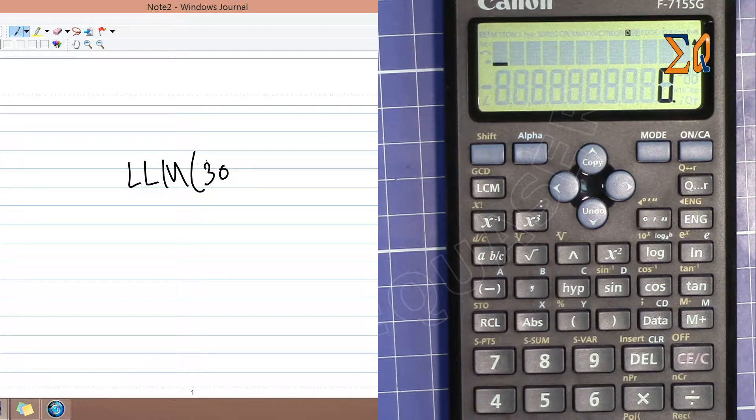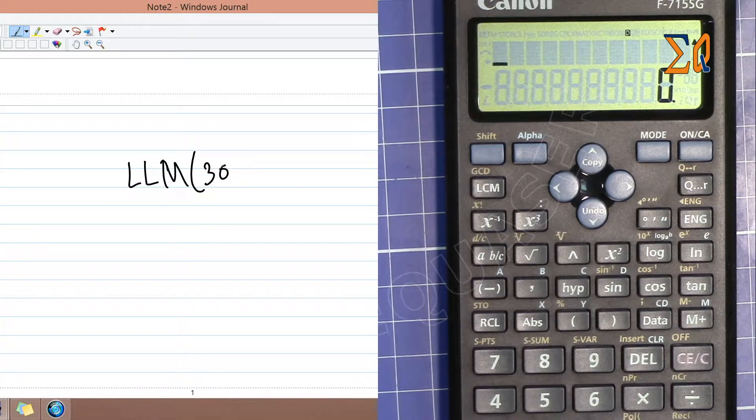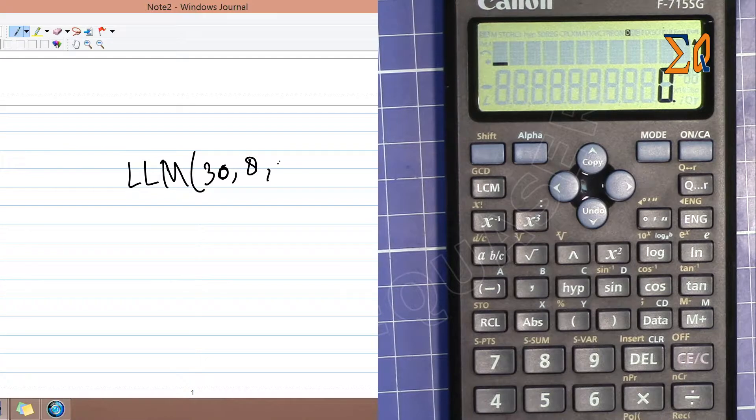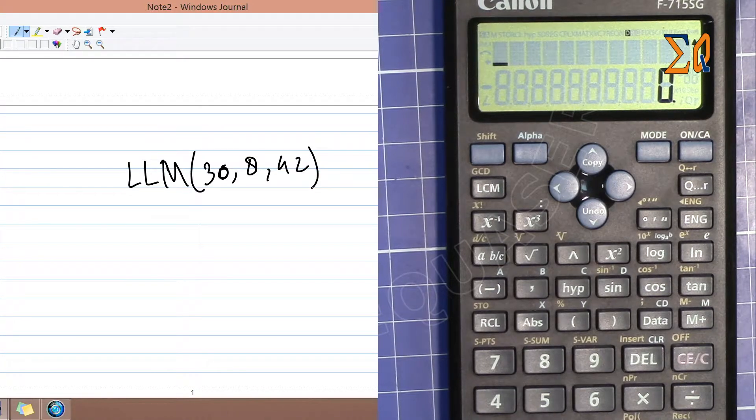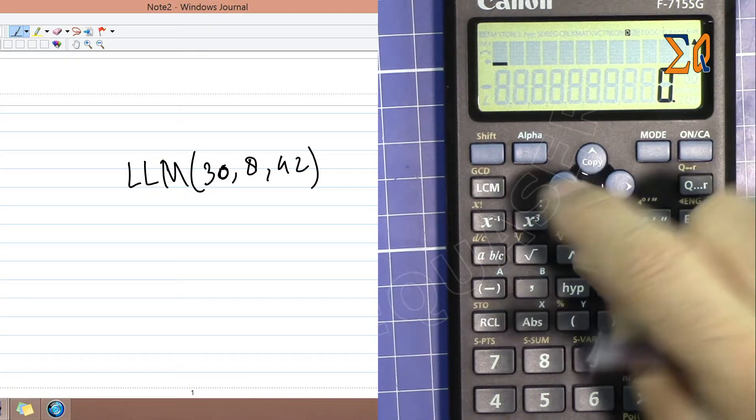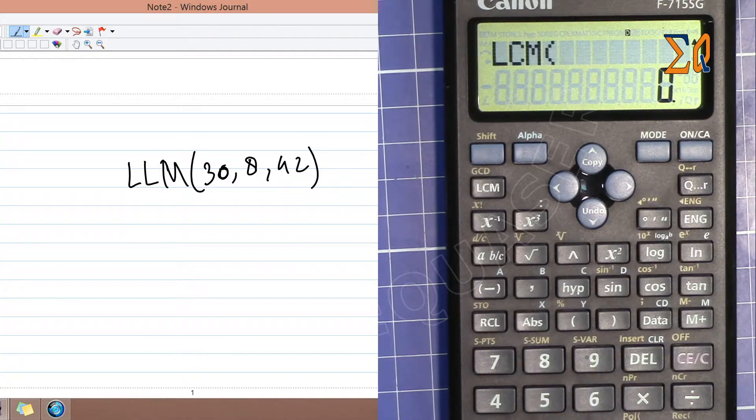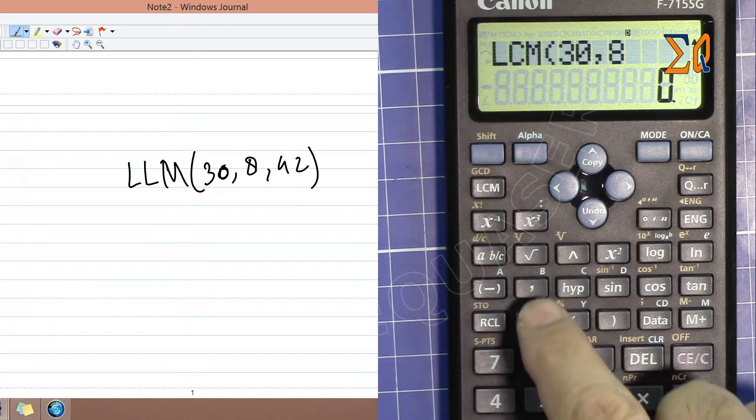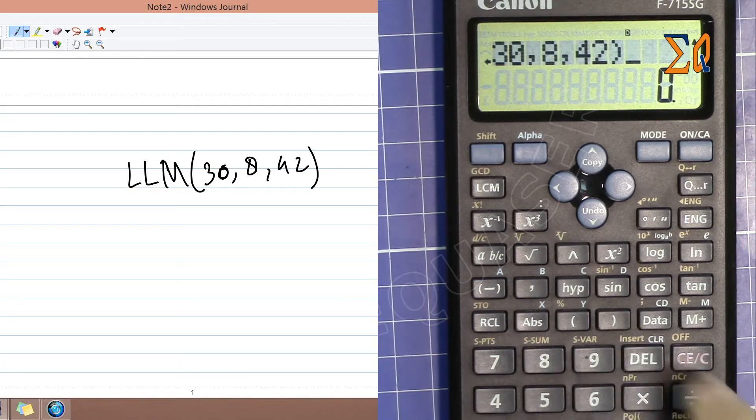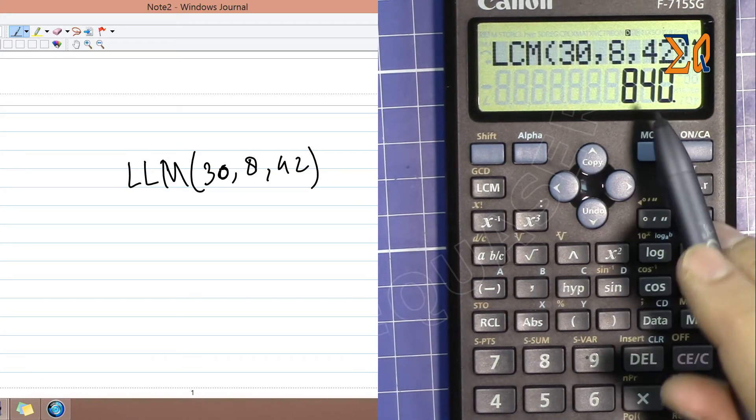LCM of 30 and 42. The same way we just press LCM - LCM is a direct button - so 30, and then press the comma, 42, close the parenthesis, and that's the answer.